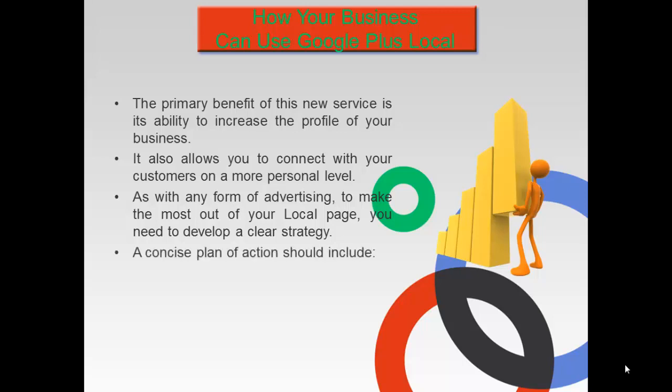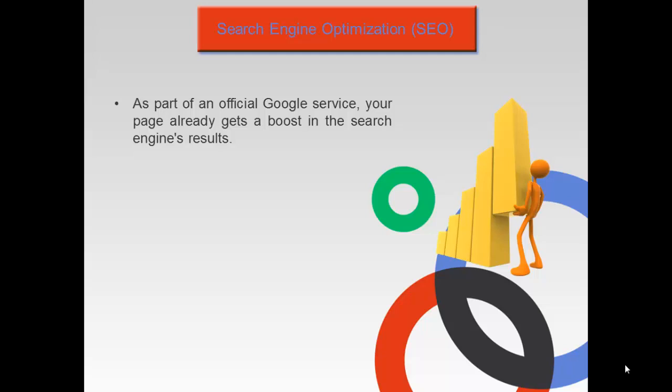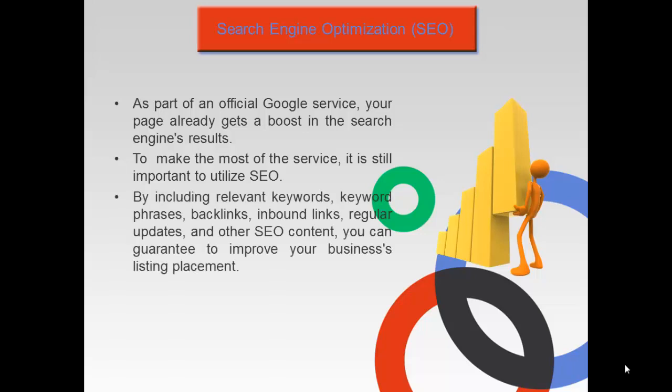A concise plan of action should include Search Engine Optimization, or SEO. As part of an official Google service, your page already gets a boost in the search engine's results. To make the most of the service, it is still important to utilize SEO. By including relevant keywords, keyword phrases, backlinks, inbound links, regular updates, and other SEO content, you can guarantee to improve your business's listing placement.